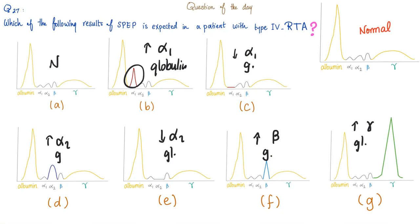Which result is expected in a patient with type 4 RTA? To understand this, we need to review the different types of RTA. Type 1 has a defective distal convoluted tubule. Type 2 has a defective proximal convoluted tubule. Type 4 has low renin, which leads to low aldosterone. Note: type 1 is distal, type 2 is proximal — it's weird. Type 3 doesn't exist. Type 4 is low renin, low aldosterone renal tubular acidosis.